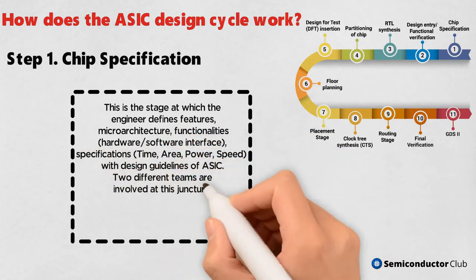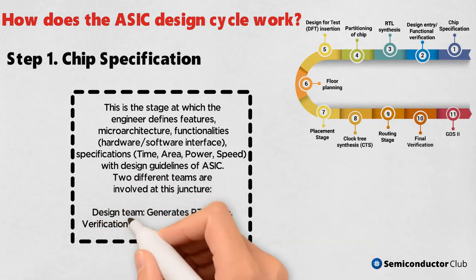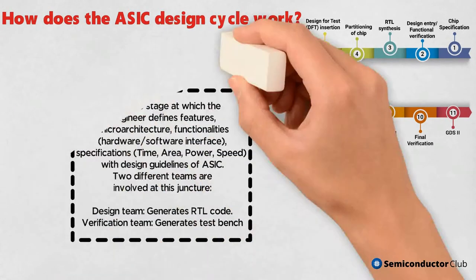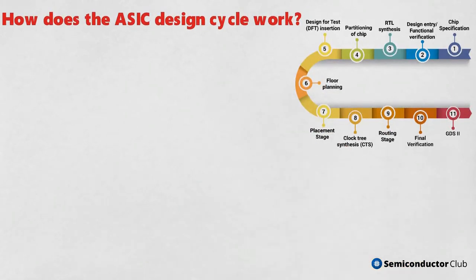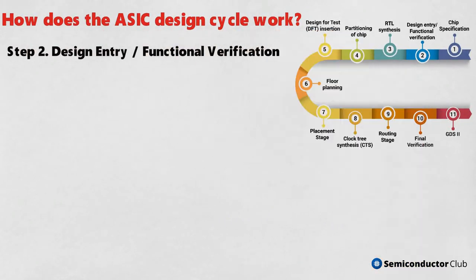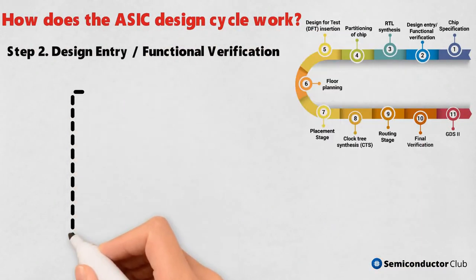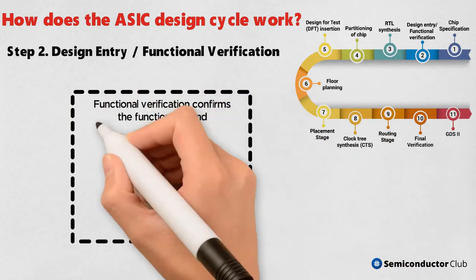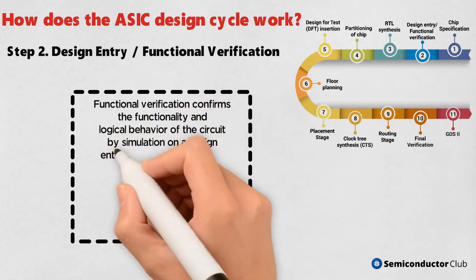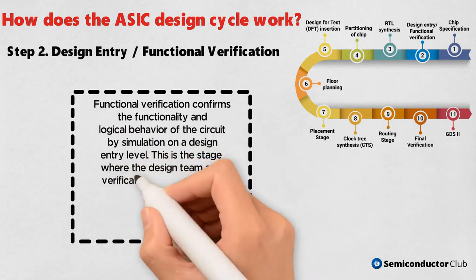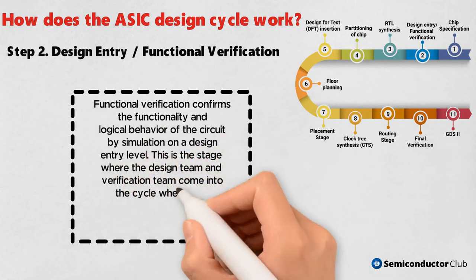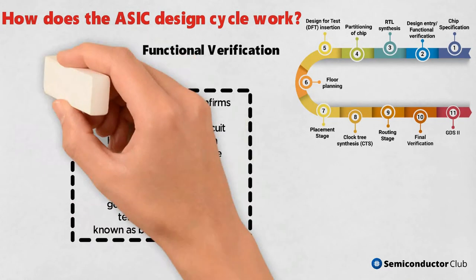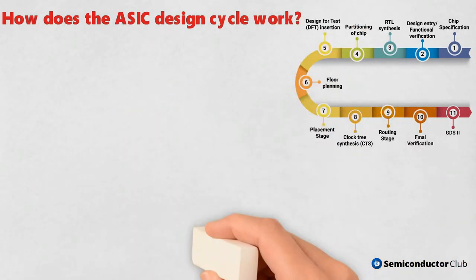The Design Team generates RTL code and the Verification Team generates a Test Bench. Step 2: Design Entry and Functional Verification. Functional Verification confirms the functionality and logical behavior of the circuit by simulation on a design entry level. This is the stage where the design team and verification team come into the cycle, generating RTL code using test benches — known as behavioral simulation.